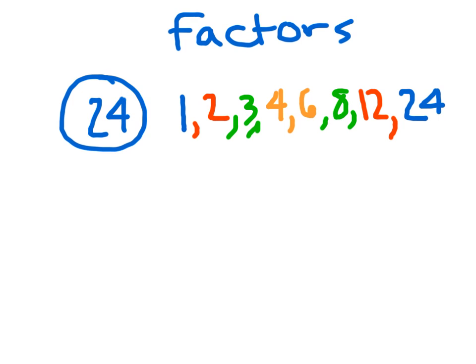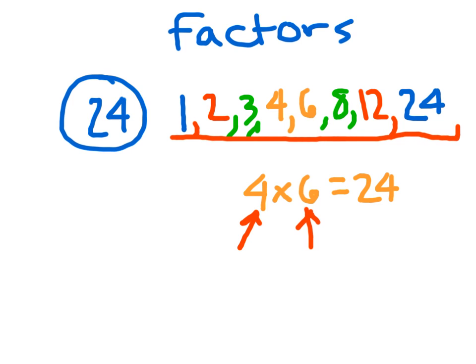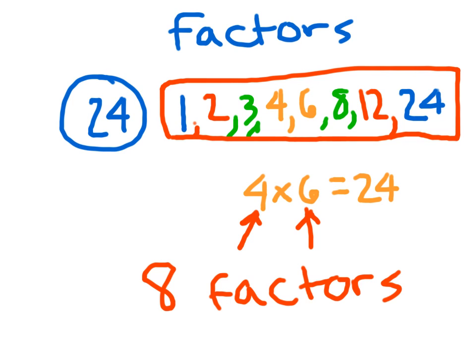4 times 6 does equal 24 — each of those is called a factor. The only other number we didn't check was 5, but 24 is not divisible by 5. So we have our factors of 24. Count them up — did you come up with 8? We had 8 factors of 24.